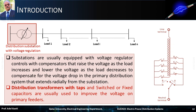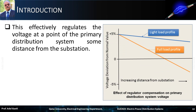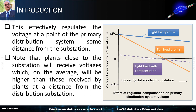Distribution transformers with taps and switched or fixed capacitors are usually used to improve the voltage on primary feeders. This effectively regulates the voltage at a point of the primary distribution system located at some distance from the substation. Note that plants close to the substation will receive voltages which, on average, will be higher than those received by plants at a farther distance from the distribution substation. In this figure, the dashed line in magenta color shows the regulated voltage with compensation for a light load. With voltage regulation and compensation, it is possible to maintain the voltage close to its nominal value, which makes the voltage deviation nearly equal to zero.